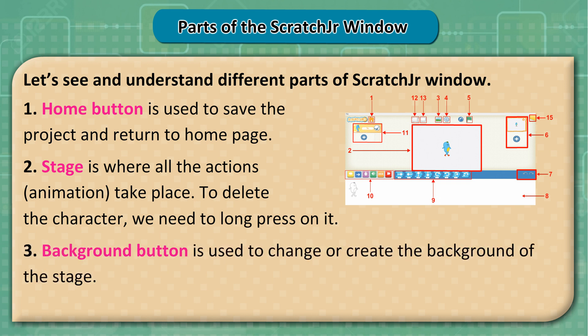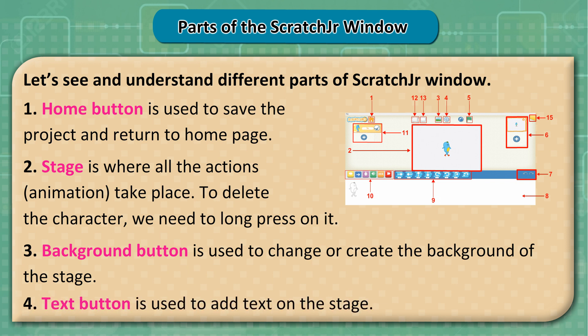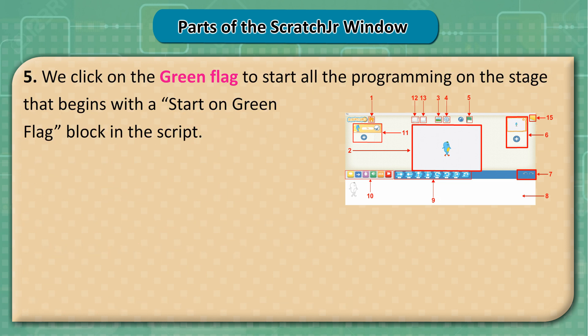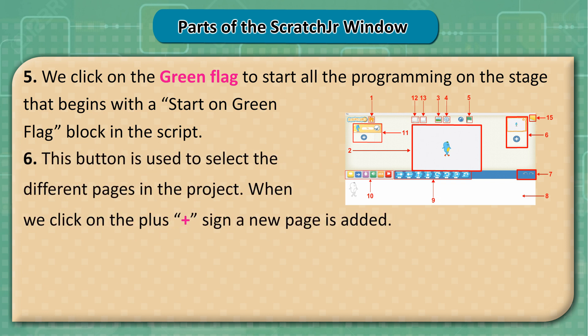3. The Background button is used to change or create the background of the stage. 4. The Text button is used to add text on the stage. 5. We click on the green flag to start all the programming on the stage that begins with a start on green flag block in the script. 6. This button is used to select different pages in the project. When we click on the plus sign, a new page is added.